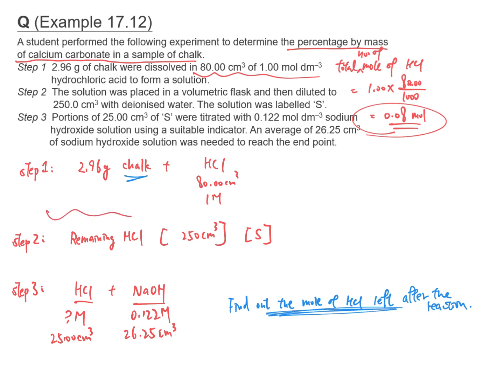In step 1, some of the acid was used to react with the chalk, and then there is some remaining acid. But we don't know how many moles of HCl were used. So we need to do step 3 to find out the number of moles of acid left after the reaction.